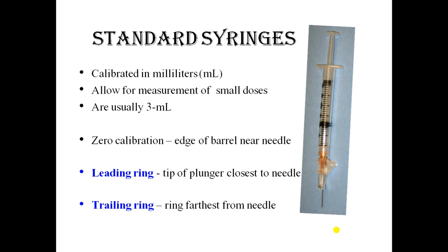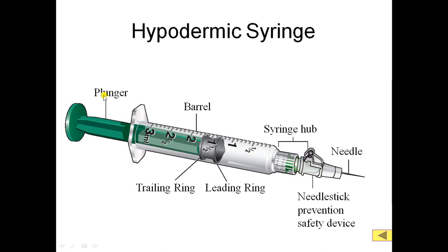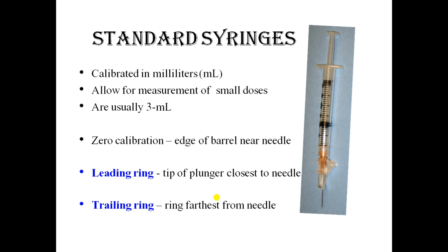The standard syringe is calibrated in milliliters and allows for measurement of small doses, usually up to 3 ml. Calibration starts at zero at the edge of the barrel near the needle. The leading ring refers to the tip of the plunger closest to the needle, and the trailing ring is the ring farthest from the needle.